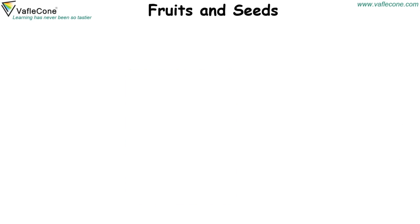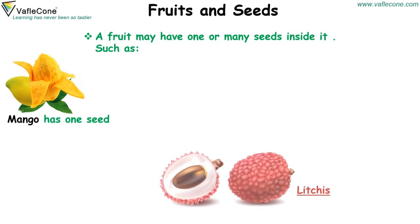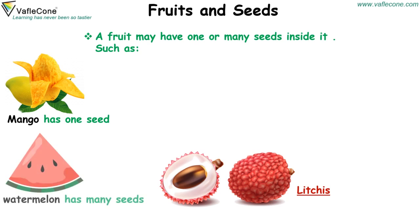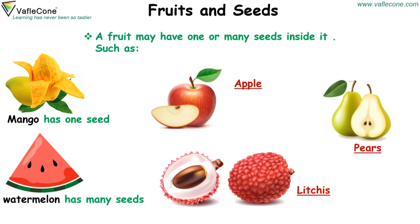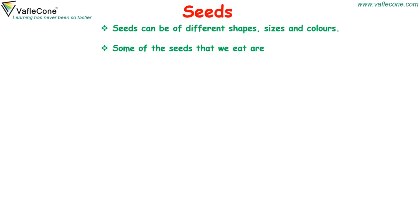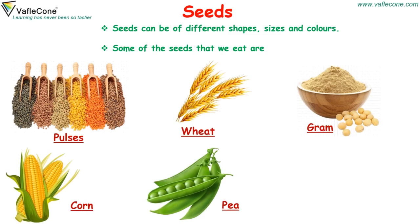Fruits and seeds: A fruit may have one or many seeds inside. Such as mango and lychee have one seed. Watermelon, apple and pears have many seeds. Seeds can be of different shapes, sizes and colors. Some of the seeds that we eat are pulses, wheat, gram, corn, peas and beans.